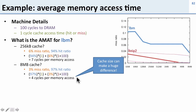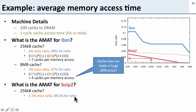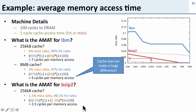How about another application? For BZIP2 with a 256 kilobyte cache, we can see the miss ratio is about one and a half percent, meaning 98.5% of accesses are hits. Doing the calculation, we get 2.5 cycles per memory access.